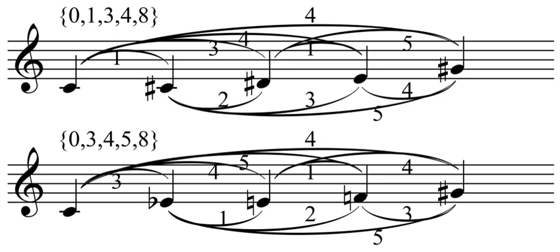Operations on ordered sequences of pitch classes also include transposition and inversion, as well as retrograde and rotation. Retrograding an ordered sequence reverses the order of its elements. Rotation of an ordered sequence is equivalent to cyclic permutation.